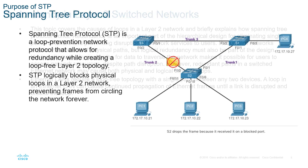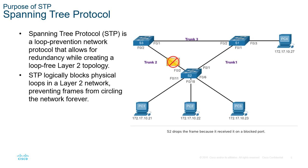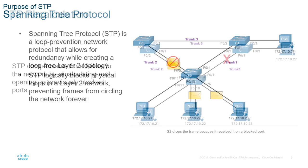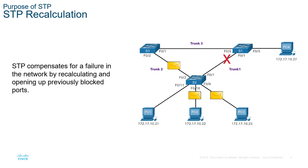STP breaks the loop logically. Here we have that circle — S1, S2, S3 — there is a physical loop. We have connections between S1 and S2 (trunk 1), between S1 and S3 (trunk 3), and between S2 and S3 (trunk 2). This is a looped environment, so STP will logically disable an interface to prevent this loop from occurring. If there is a failure between S1 and S2, the switches will turn back on the link it had previously turned off to provide that alternate path — that's called STP recalculation.